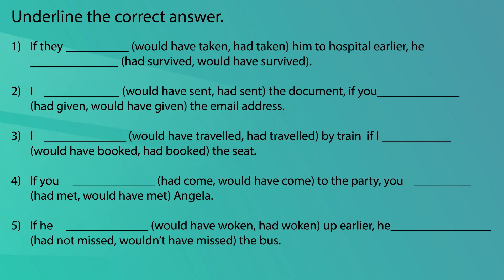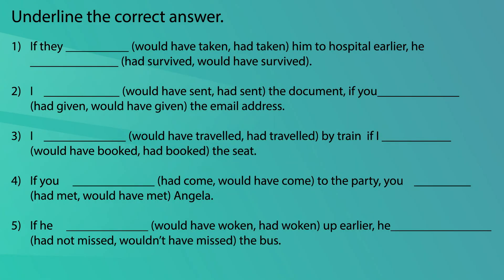Okay children, let's do one more activity. Here you have to underline the correct answer from the three options given. Pause the video and do the activity now. In all these sentences there are two blanks — one in the conditional clause and the other in the result clause. As you remember, in the conditional clause you have to use past perfect tense, and in the result clause you use would + have + past participle.